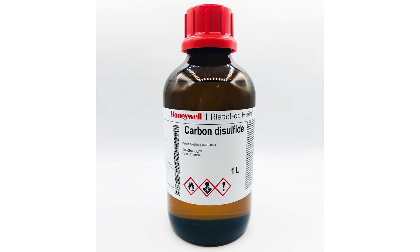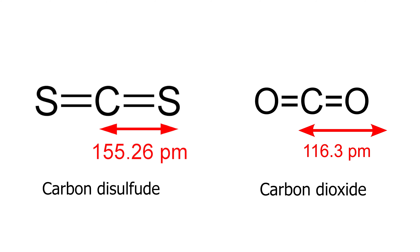Carbon disulfide is a volatile liquid which is frequently used as a solvent. It is actually the sulfur analog of carbon dioxide and finds many applications in organic synthesis. Through the years it proved to be one of the hardest chemicals to get my hands on — until now.